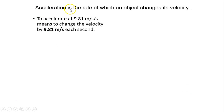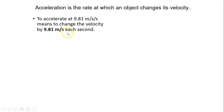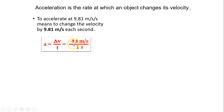Acceleration, by definition, is how fast an object changes its velocity. Acceleration at 9.81 meters per second squared means the velocity changes by 9.81 meters per second every second. Negative means going downward — the change is downward.